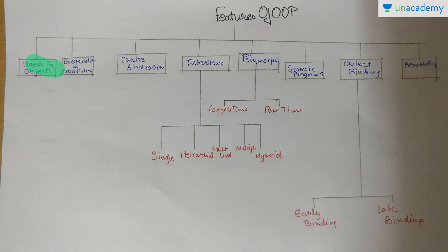The basic features of OOP, as shown in the flowchart, are: classes and objects, encapsulation and data hiding, data abstraction, inheritance, polymorphism, generic programming, and object binding and reusability. Inheritance has five sub-parts: single inheritance, hierarchical inheritance, multi-level inheritance, multiple inheritance, hybrid inheritance. Polymorphism has compile-time polymorphism and runtime polymorphism as its parts. Object binding has two sub-parts: early binding and late binding.